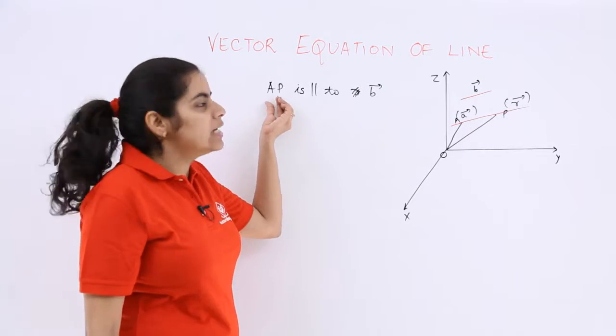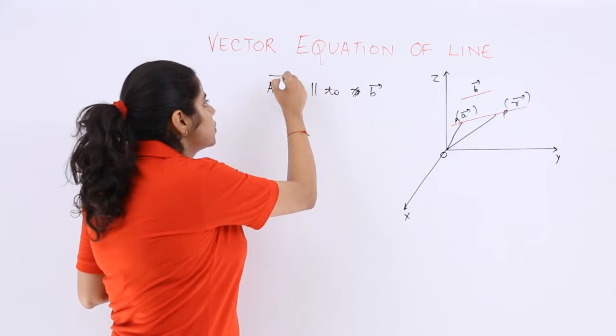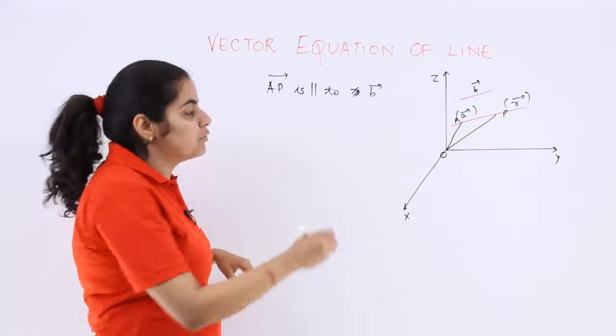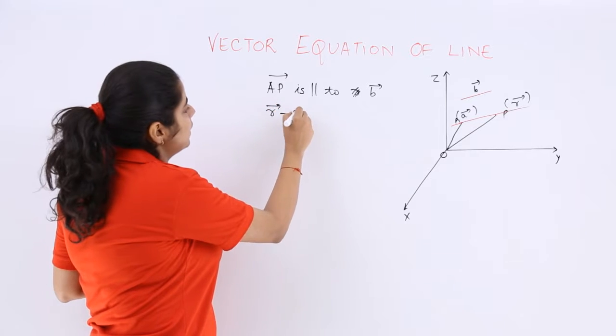Now ap is what? If you have to find out the position vector of this, then p vector minus a vector which is equal to r vector minus a vector.